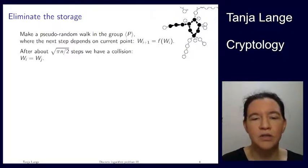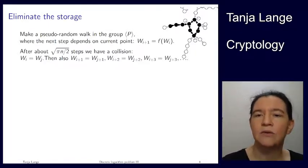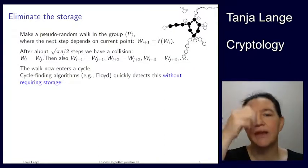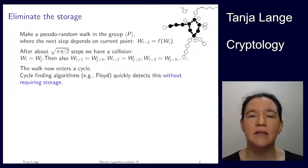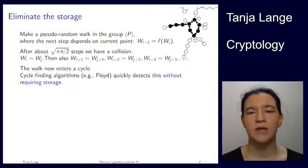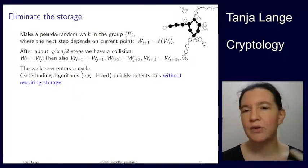So we have found that w_i is equal to w_j. That also means that the next step we take, we have reached this point here, which is the collision point. And we're now taking the next step jointly. That's the w_i plus 1, which is also equal to w_j plus 1. And also for plus 2, plus 3, plus 4, plus 5 and so on. So once we enter the cycle, we're actually running around. So we keep on running in the cycle. And the nice thing is that the literature on algorithms has what is called cycle finding algorithms. And those are meant to be used without requiring storage. So I do not have to tabulate all my w_i.